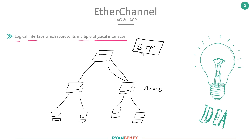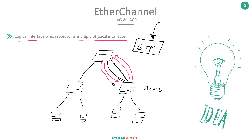Spanning Tree is actually the next topic in the course, but effectively Spanning Tree tries to prevent a Layer 2 loop from occurring, and it does that by disabling ports. If we have two cables between switches, Spanning Tree sees this as a loop because traffic will get broadcasted out into one switch, which broadcasts it back down, and back up again — leaving a frame continuously looping in the network.